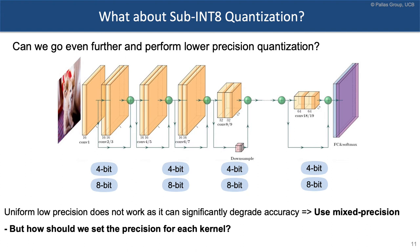There is an easy fix: mixed precision quantization. The idea is that for a neural network, you keep some layers that are very sensitive at higher precision — for example, the first few layers, which are extremely important for extracting Gabor features — and quantize less sensitive layers to lower precision. However, even with just two bit-precision choices per layer, this creates an exponentially large search space of 2 to the power of the number of convolutions.